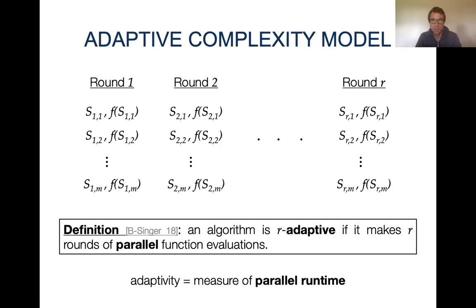To see this, you can imagine that we have multiple CPUs, and in each round the CPUs each perform a function evaluation in parallel. This is an information-theoretic measure for the parallel runtime of an algorithm for black-box optimization, just in terms of function evaluations, abstracting out lower-order details needed for a parallel implementation.